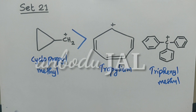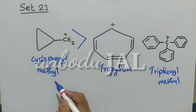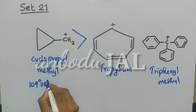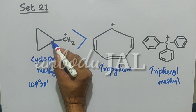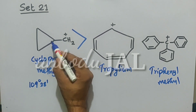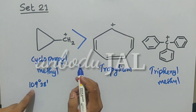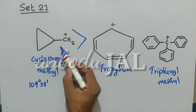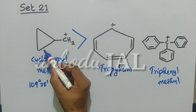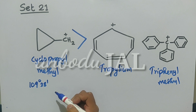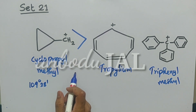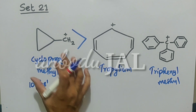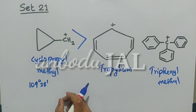In the cyclopropyl ring, the bond angle is minimum — 60 degrees. For sp3 carbon, the expected bond angle is 109 degrees 28 minutes. Since the bond angle is only 60 degrees, there is a tendency to increase it to 109 degrees 28 minutes. For that purpose, the C-C bonds of the ring come into conjugation with the positive charge. That is why this is known as sigma resonance, and because of this reason the cyclopropylmethyl carbocation is exceptionally stable.